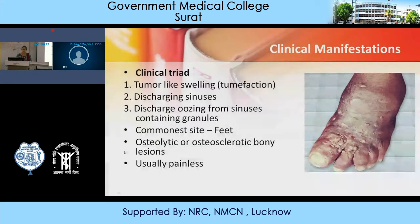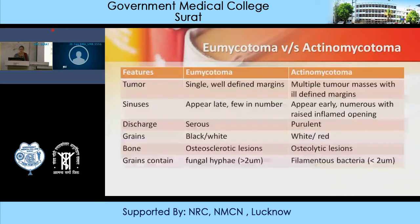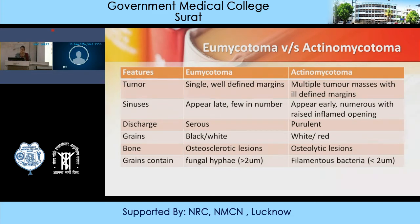How can we differentiate between Eumycetoma and Actinomycetoma? In Eumycetoma, the tumor is single with a well-defined margin, while in Actinomycetoma, multiple tumor masses are seen with ill-defined margins. In Eumycetoma, sinuses appear late and are few in number, while in Actinomycetoma they appear early, are numerous, with rays and inflamed openings.